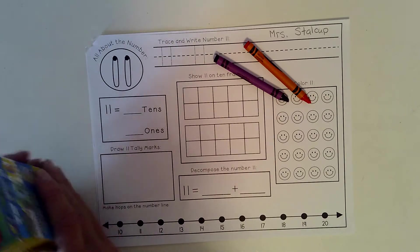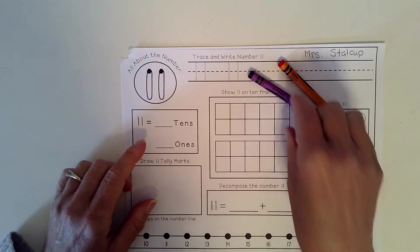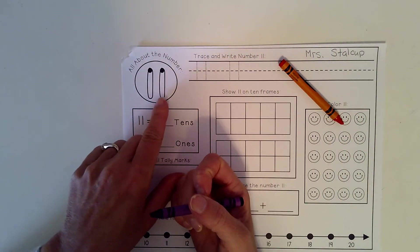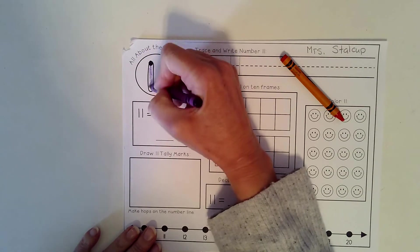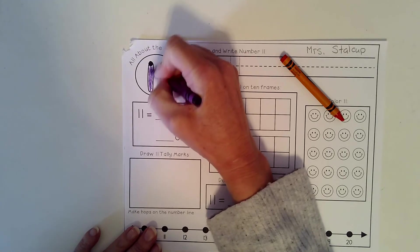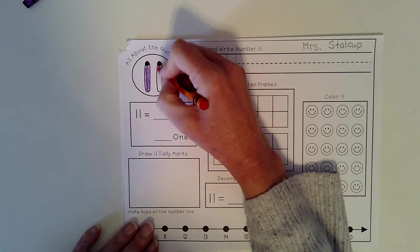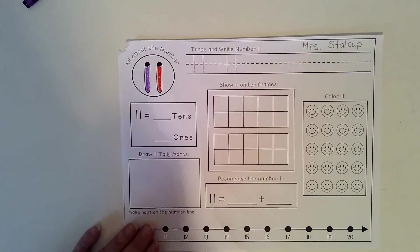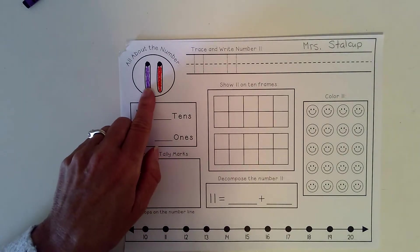Before we begin, let's go ahead and color the number 11. The math way to say number 11 is 1 ten, 1. So I'm going to color the 1 ten purple. Then I'm going to color the 1 one, orange. You'll see as we do this why we can call 11, 1 ten, 1.